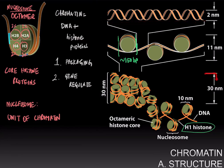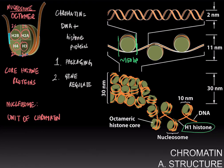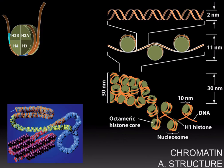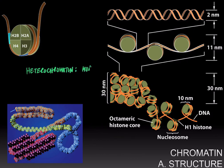These nucleosomes further form higher-level structures such as the 30 nanometer fiber, and are further compacted to create two types of domains or regions of the chromosome. One is heterochromatin, which is more compacted chromatin, and the other is euchromatin, which is less compacted.